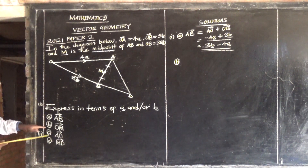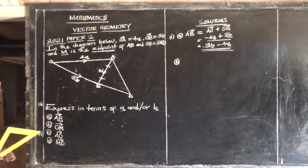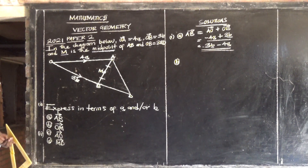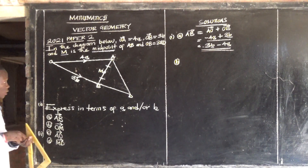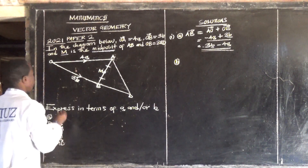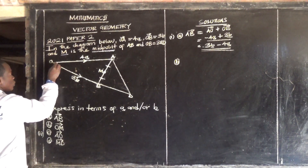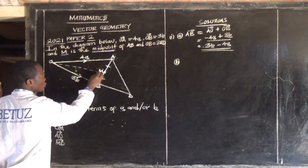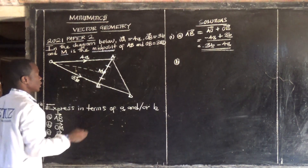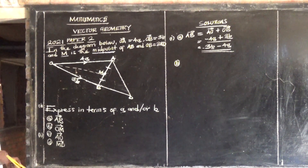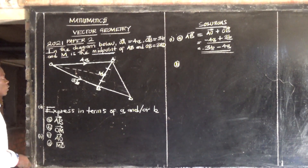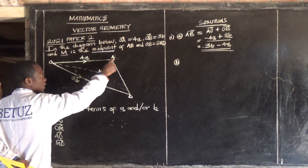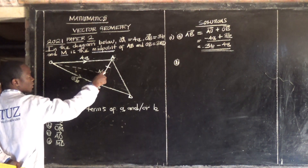Now they want us to find OM. From O to M, you can say OA plus AM. So OM is equal to OA plus AM.